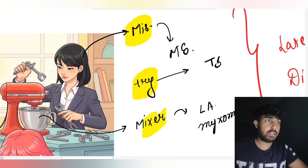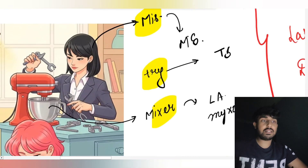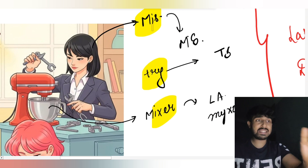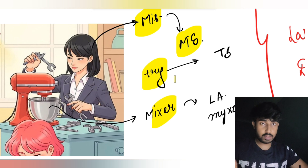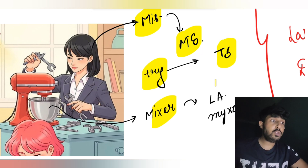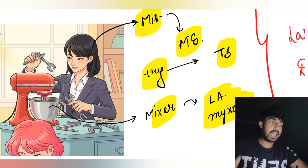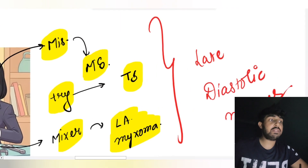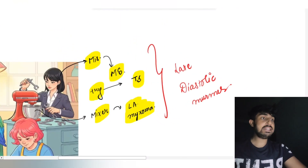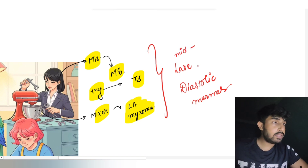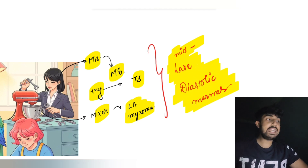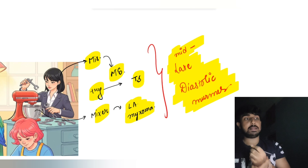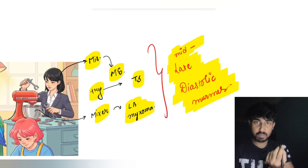This miss is trying to fix the mixer. Miss says what you have to remember — mitral stenosis. Trying says tricuspid stenosis, and mixer represents left atrial myxoma. These are mid to late diastolic murmurs; mid and late are almost the same here.